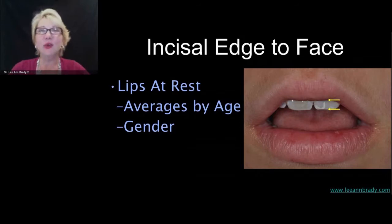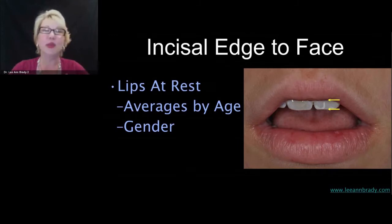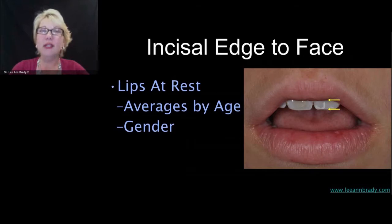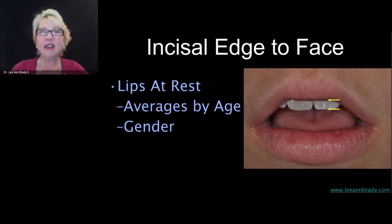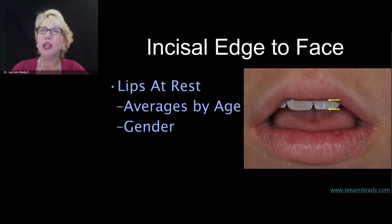For that same woman aging into her 60s, upper tooth display is minimized to about 1 to 1.5 millimeters. A tiny amount comes from attrition; most comes from gravity and the lip hanging a little bit lower. For planning purposes, I plan on the long side — if I'm thinking 3.5 to 4 millimeters, I'll have the wax-up done at 4 millimeters because it's much easier to shorten in provisionals or composite than to lengthen. For men at any given age, it's about a half millimeter less tooth display than for women.